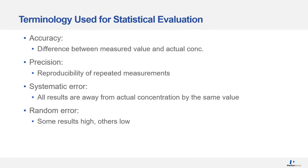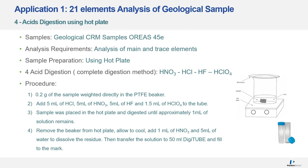Next we look at some applications. When talking about results, accuracy refers to the agreement between a measured value and a true value, whereas precision refers to the agreement between test results. Systematic and random errors can include operator or instrument errors. For the first application, we look at the analysis of a geochemical sample measuring for 21 elements. A 4-acid digestion method on a hot plate was used, and the geochemical certified reference material was OREAS 45E.